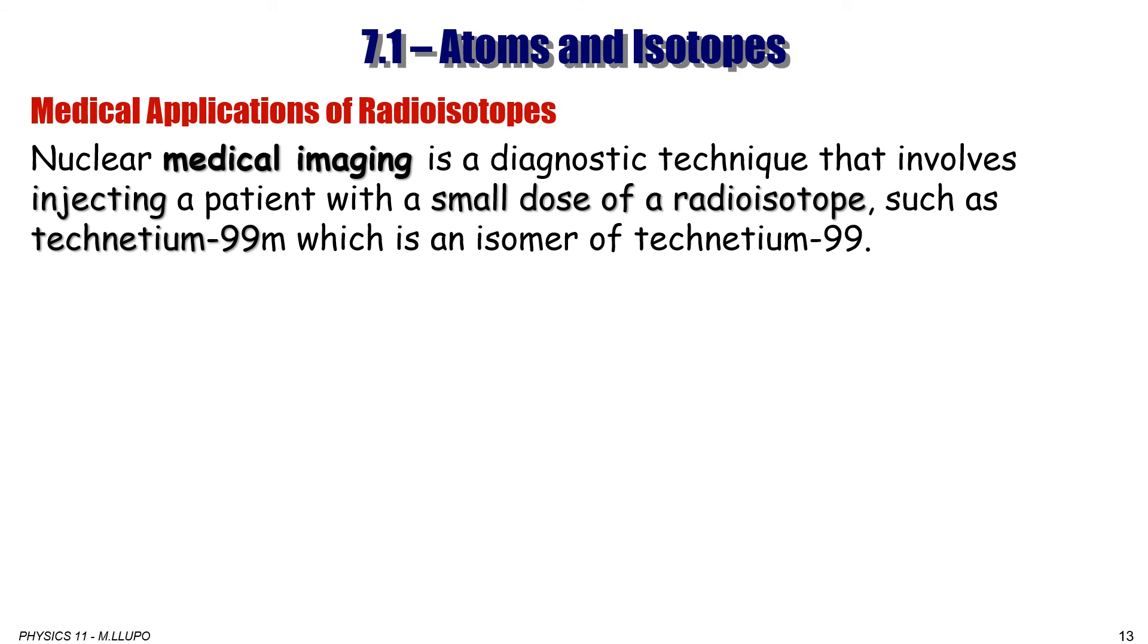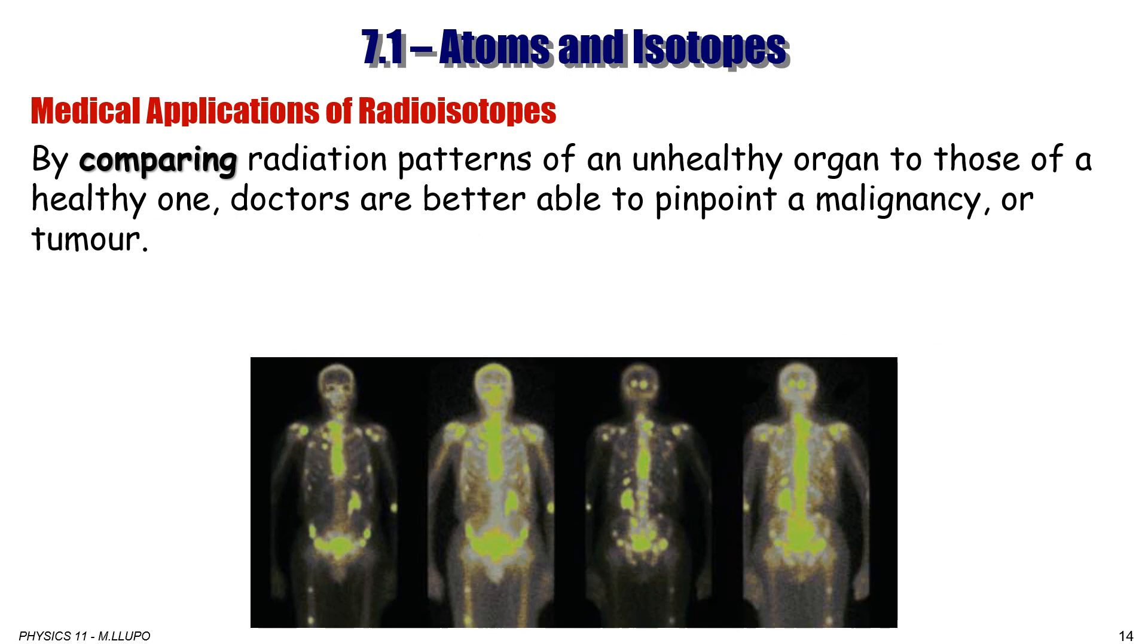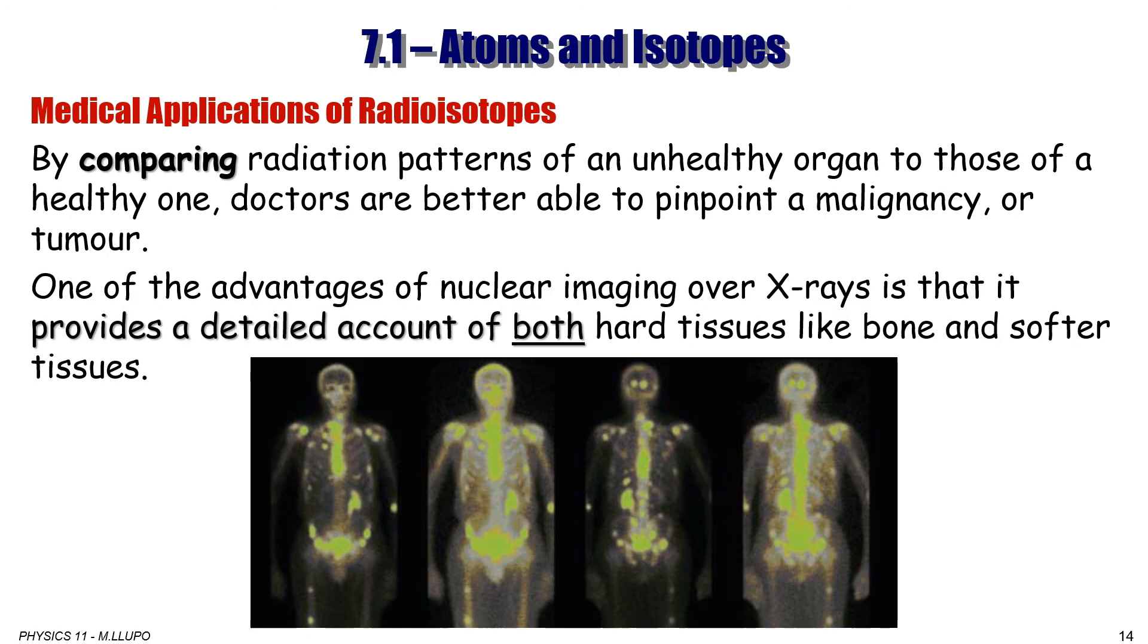Nuclear medical imaging is a diagnostic technique that involves injecting a patient with a small dose of radioisotope, such as Technetium-99m, which is an isomer of the Technetium-99. These materials are called radioactive tracers. They emit radiation that can be detected by gamma cameras and converted into an image. By comparing the radiation patterns of an unhealthy organ to those of a healthy one, doctors are better able to pinpoint a tumor or cancer.